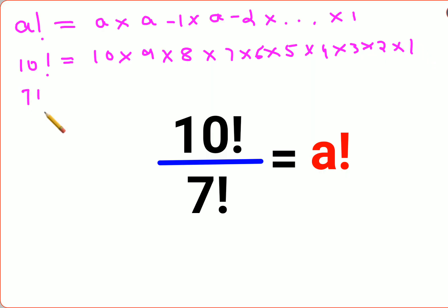Similarly, 7 factorial can be written as 7 × 6 × 5 × 4 × 3 × 2 × 1. Now if you are dividing them, because the question is 10 factorial divided by 7 factorial,